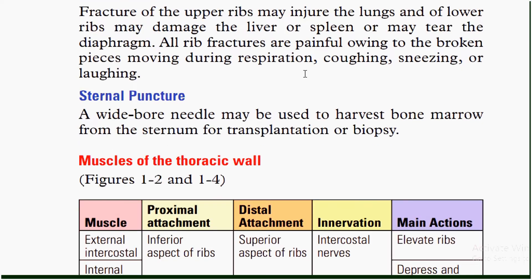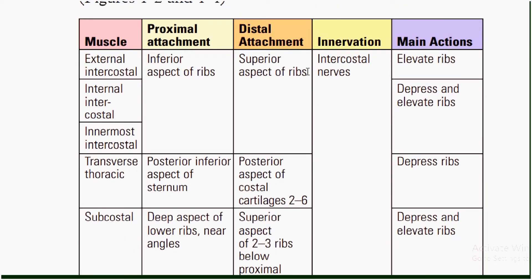Muscles of the thoracic wall: the first muscle is the intercostal muscles, which can be external, internal, and innermost. At their proximal attachment they are attached to the inferior aspects of ribs, and at the distal attachment they are attached to the superior aspects of ribs. Innervation includes the intercostal nerves.